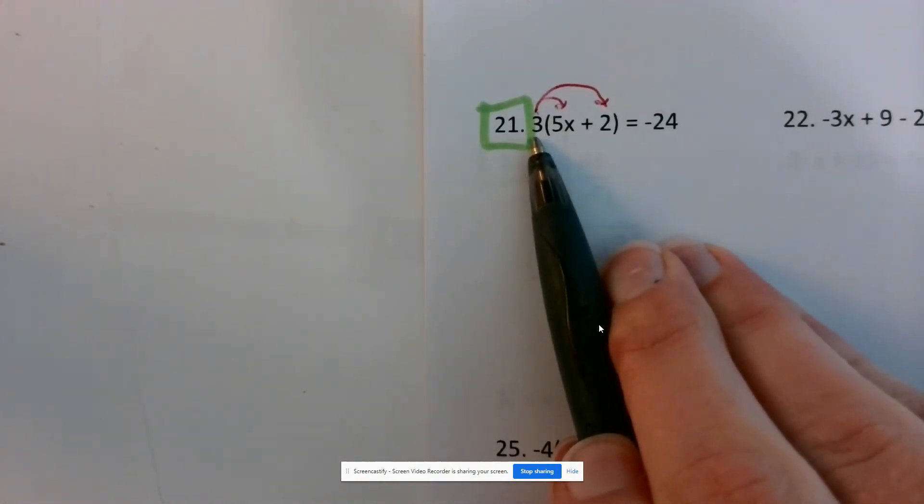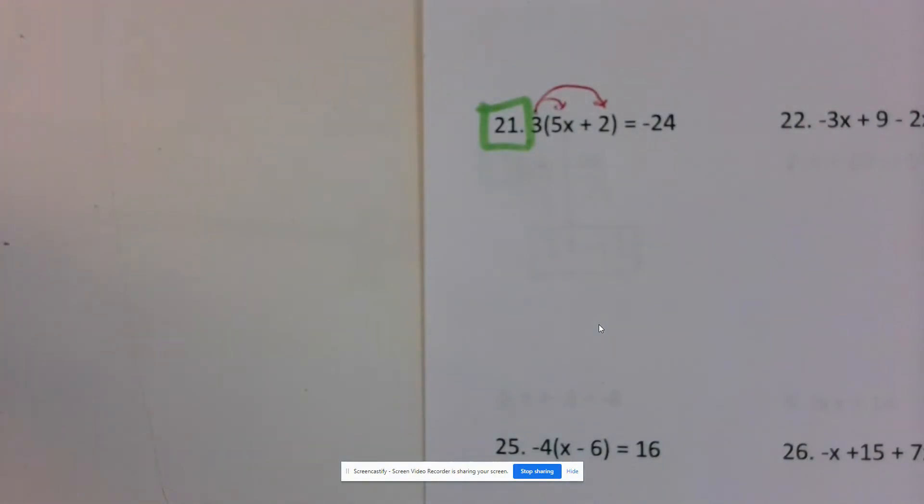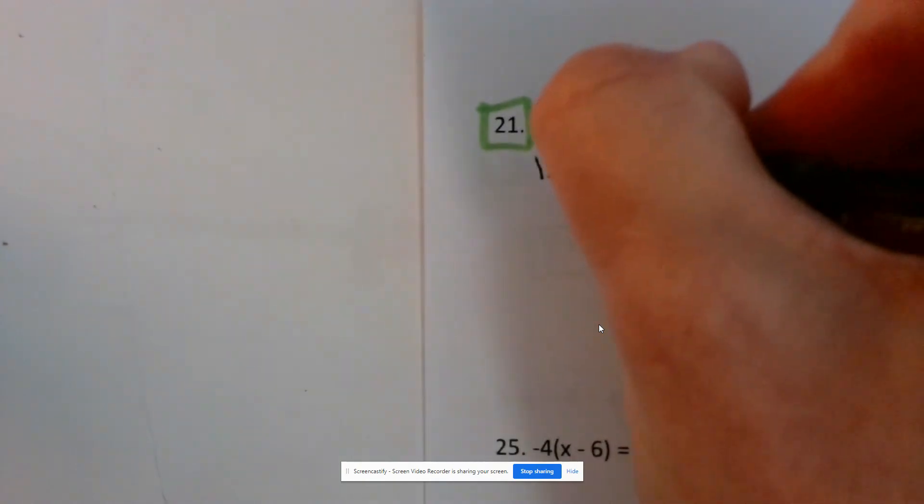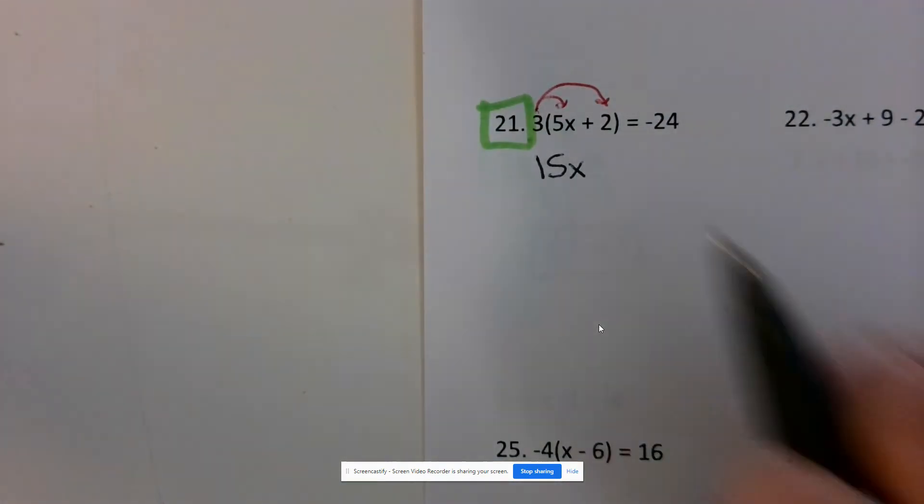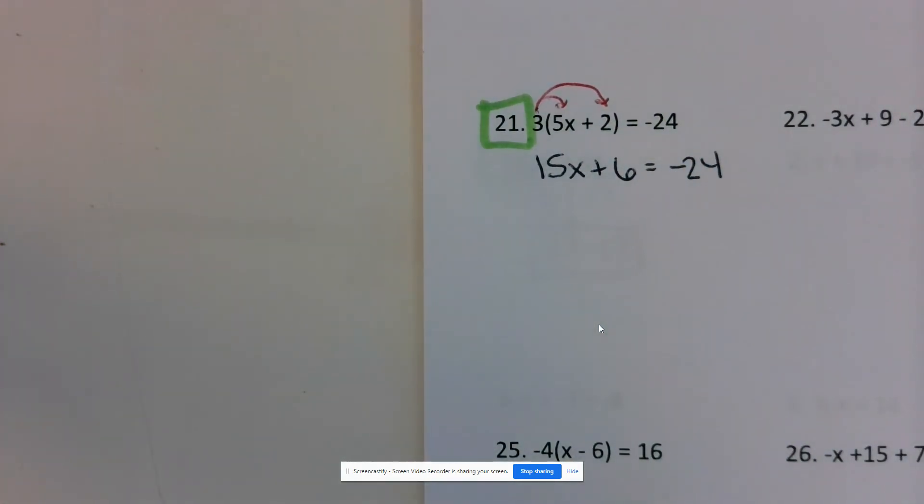When I use the distributive property, I take the number out front and multiply it by all the terms inside the parentheses. 3 times 5x is 15x. 3 times 2 is 6. So that's one way you can start off solving the equation.